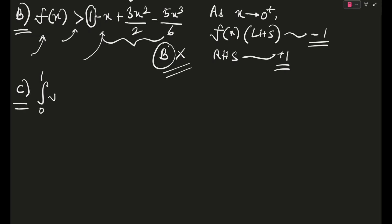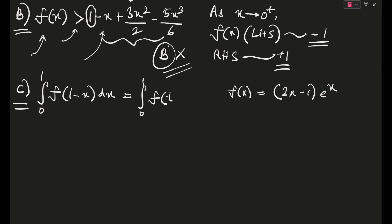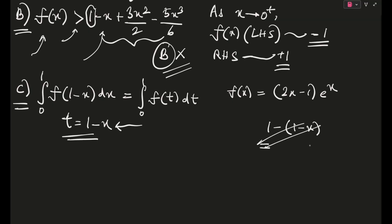For option C, the integral from 0 to 1 of f(1 − x) dx — recall f(x) = (2x − 1)·eˣ. This can be made equal to the integral from 0 to 1 of f(t) dt by substituting t = 1 − x, or equivalently by applying King's rule: the limits go from 0 to 1, and 1 minus (1 minus x) = x. Either way the variable doesn't matter. This statement is valid, so option C is correct.